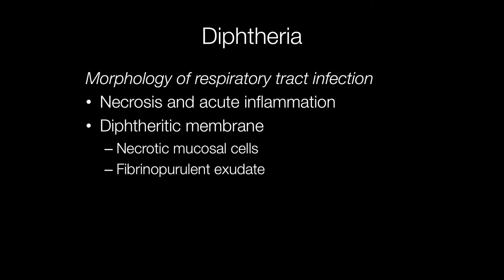Grossly and histologically, the striking changes seen with diphtheria are the production of the so-called diphtheria membrane. This is caused by necrosis and acute inflammation of the mucosa, with a fibrinopurulent exudate producing this pseudomembrane.